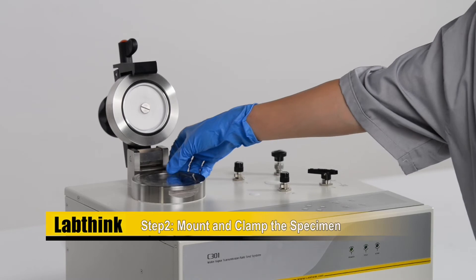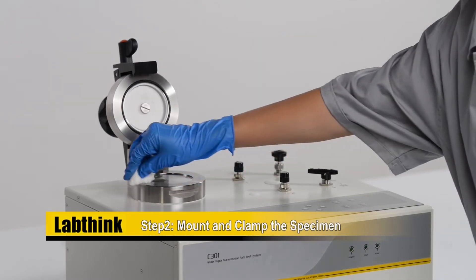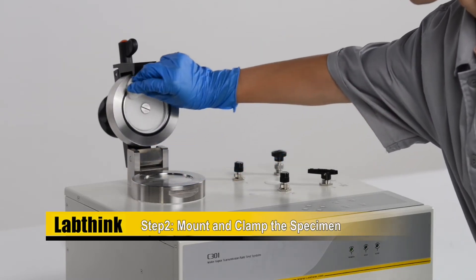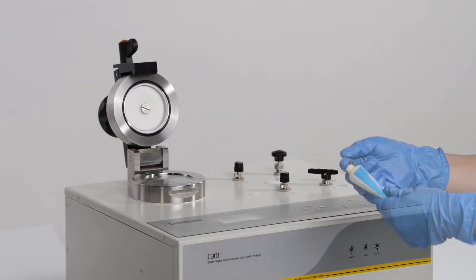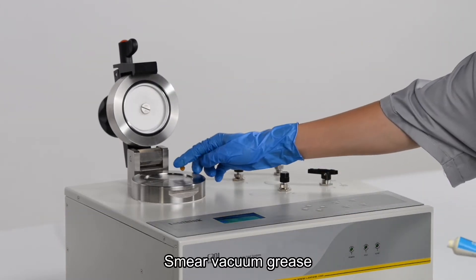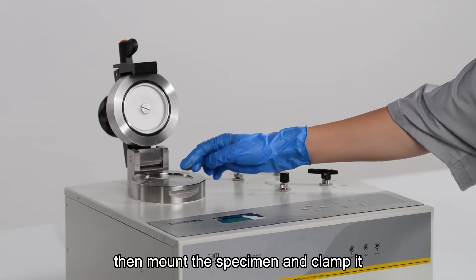Step two, mount the specimen. Smear vacuum grease, then mount the specimen and clamp it.